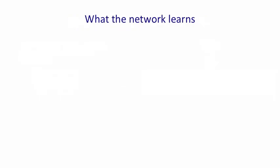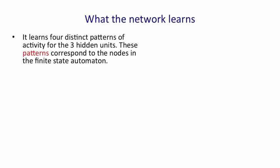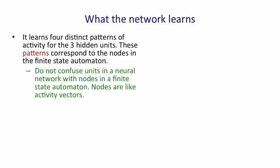It's interesting to look at what the recurrent neural network learns. It learns four distinct patterns of activity in its three hidden units, and these patterns correspond to the nodes in the finite state automaton for binary addition. Don't confuse the units in a neural network with the nodes in a finite state automaton. The nodes in the finite state automaton correspond to the activity vectors of the recurrent neural network.